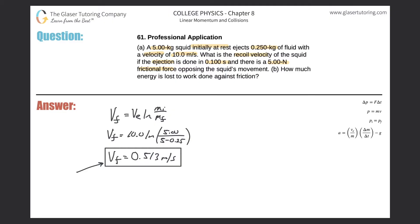The final velocity from frame one becomes the initial velocity for frame two. The squid starts at this speed and then experiences the 5-newton frictional force for that duration. The equation we can use now is: final velocity equals initial velocity plus acceleration multiplied by time.